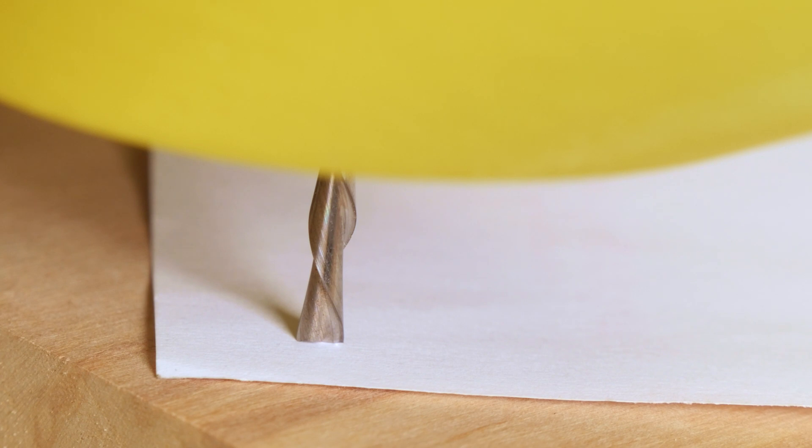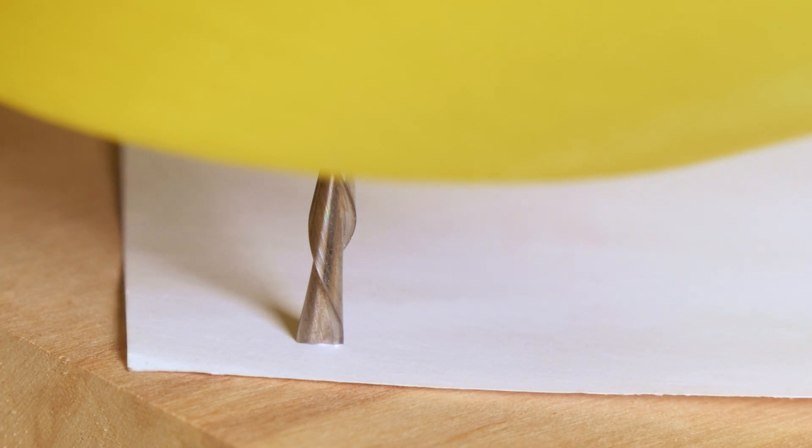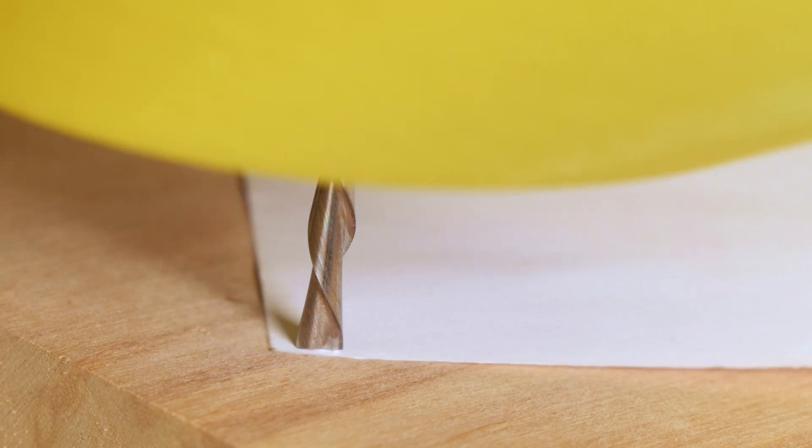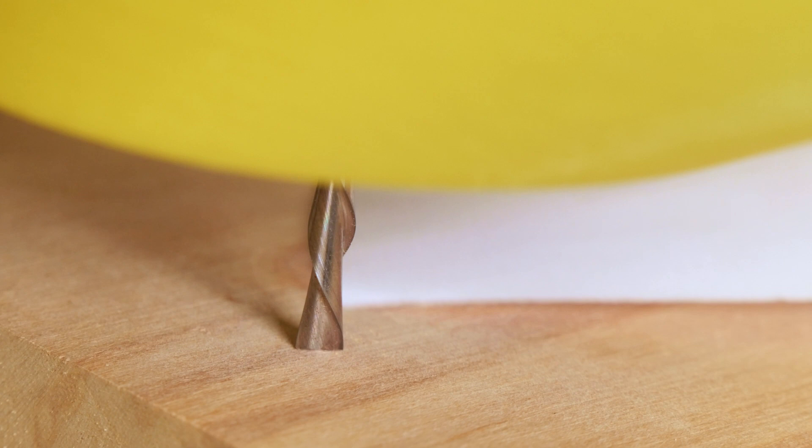So to zero the z-axis I'm going to move it down very slowly onto this piece of paper and right there I can feel a little resistance on the paper so it's very close. Now yes it may be a thickness of a piece of paper above the surface of the wood but that's okay for this purpose. It doesn't have to be super exact. And now I'll zero out the z-axis only so the x, y and z are all set.